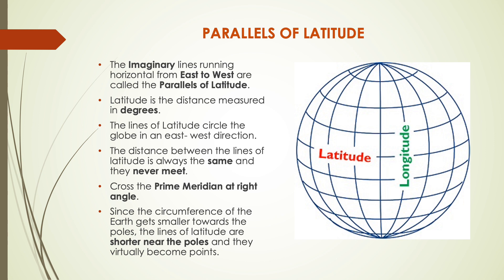The lines of latitude never meet. If you look at the image given in this slide, you will notice that all parallels are drawn with equal distance — no two parallels meet or cross each other, and the distance between any two parallels is always the same. They cross the prime meridian at right angles. Since the circumference of the earth gets smaller towards the poles, the lines of latitude are shorter near the poles and they virtually become points as we approach the poles.